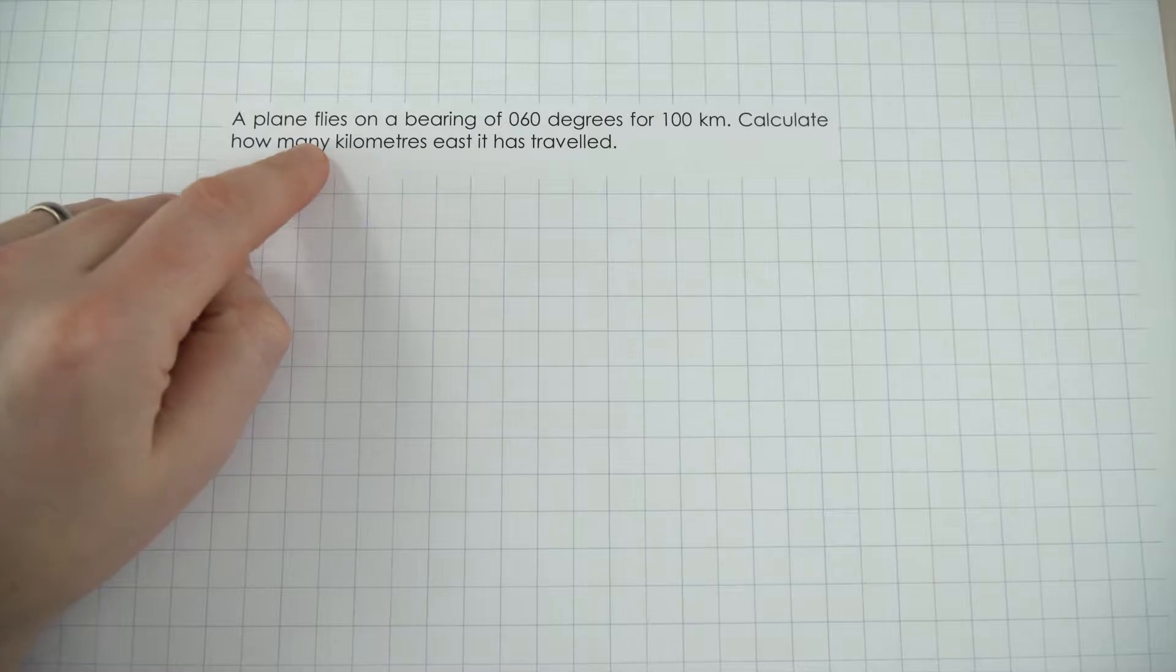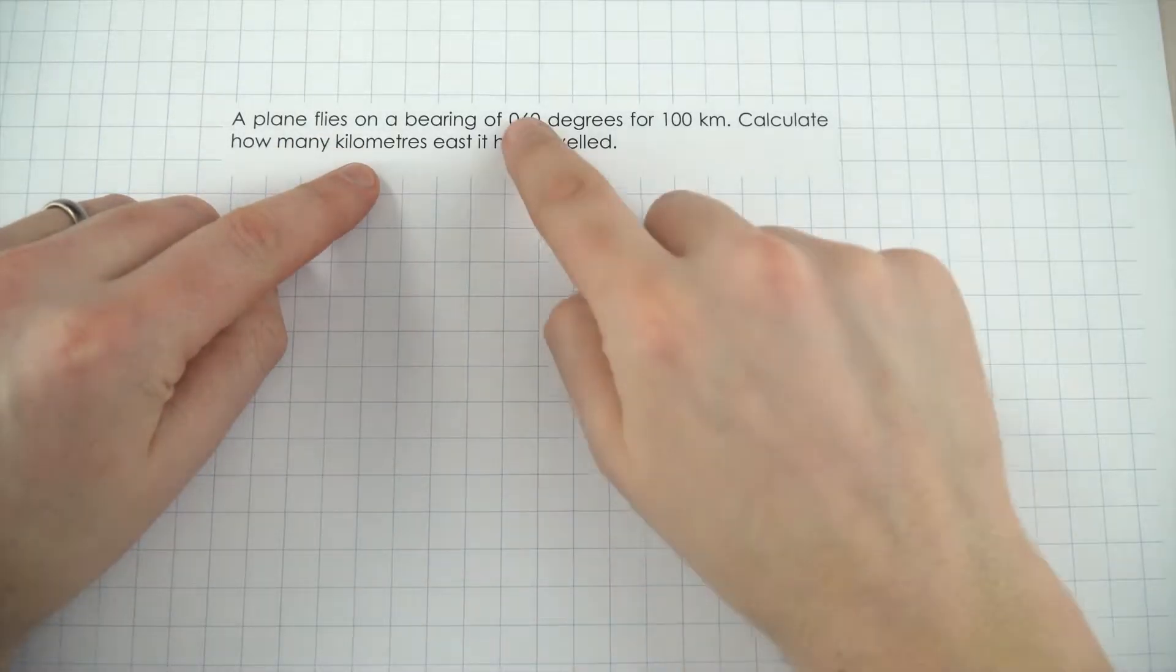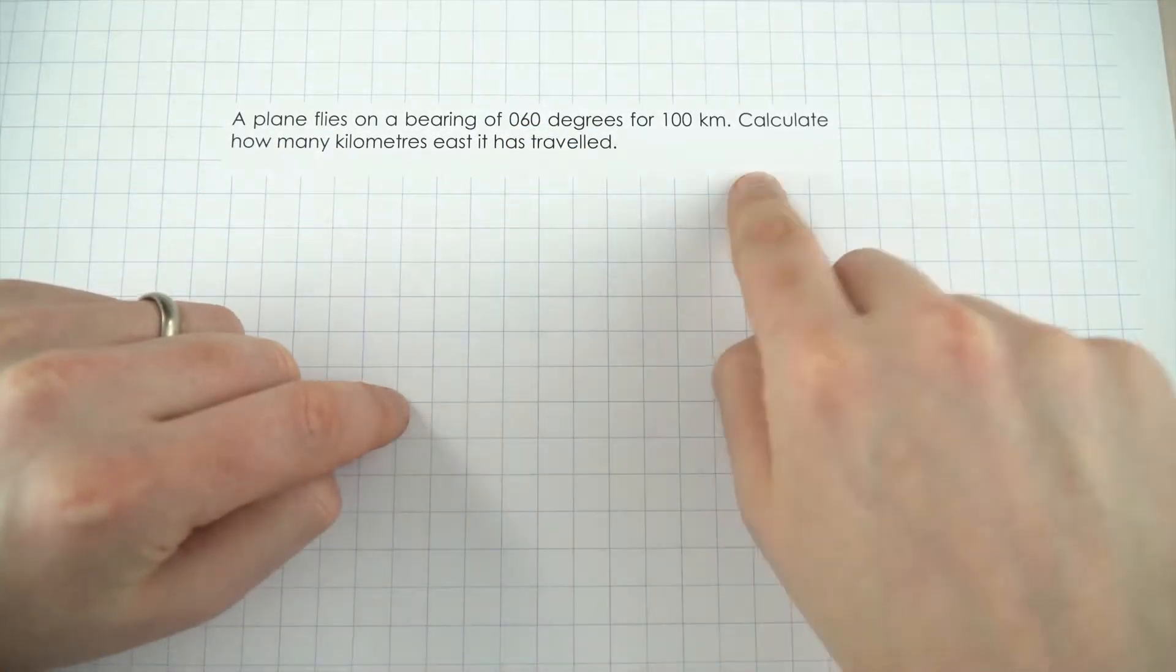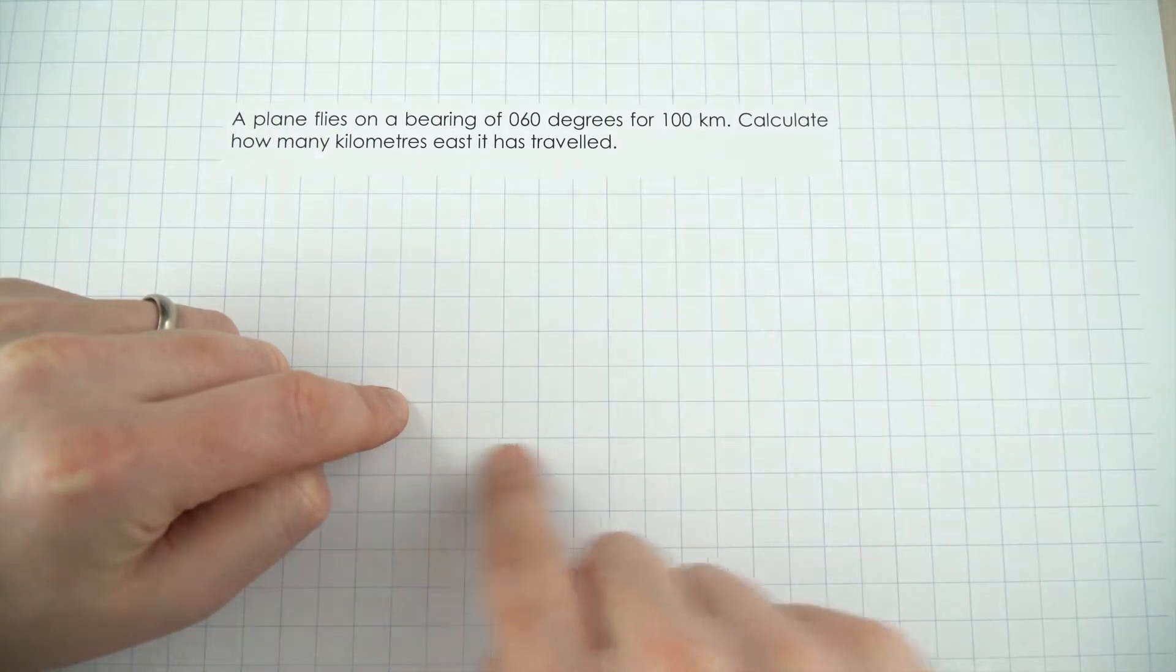Now, in this example, we've got a plane that flies on a bearing of 060 degrees for 100km, and we want to know how much further east it's travelled.